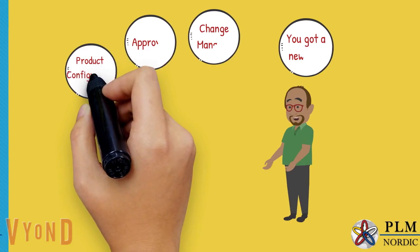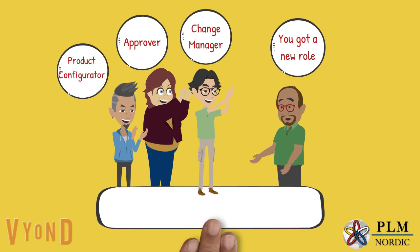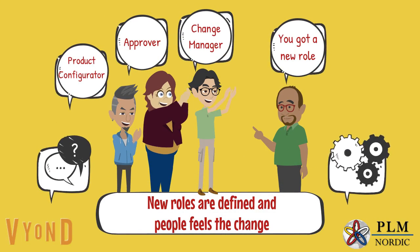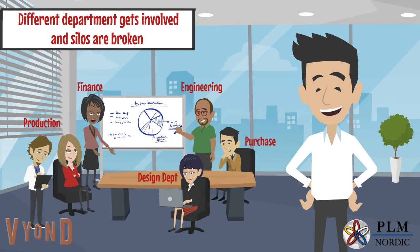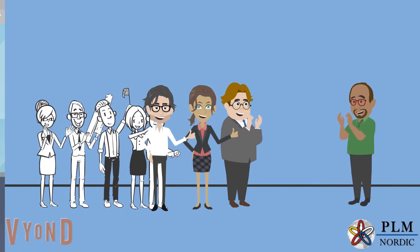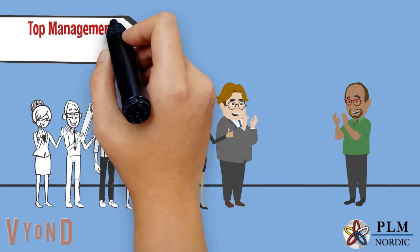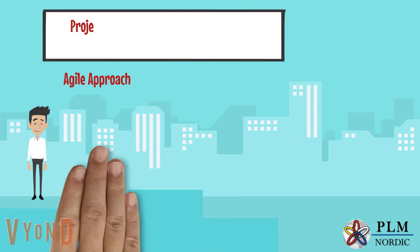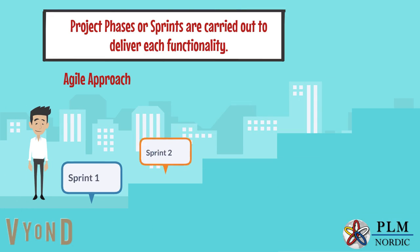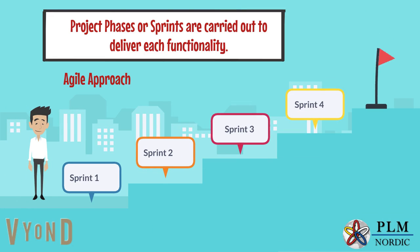New roles are defined and people feel the change. Different departments get involved in defining new processes and silos are broken. Top management also gets involved. Project phases or sprints are carried out in an agile approach to deliver each functionality. Users get more time to understand the new system and make it user friendly.